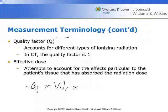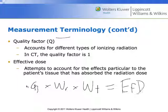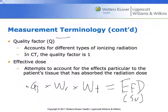We further multiply by a weighting factor for the tissue that was exposed to the radiation. This gives us an effective dose — sometimes written E sub f D — expressed in sieverts. An effective dose attempts to account for the effects particular to a patient's tissue when they've absorbed a specific weight of radiation dose.